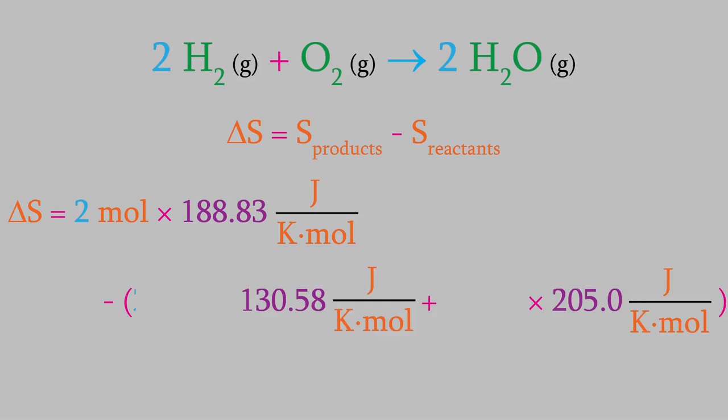Here again, notice that the hydrogen gas has a coefficient of 2, so we'll multiply the entropy of the hydrogen by 2. When we solve the equation, we get negative 88.5 joules per kelvin.